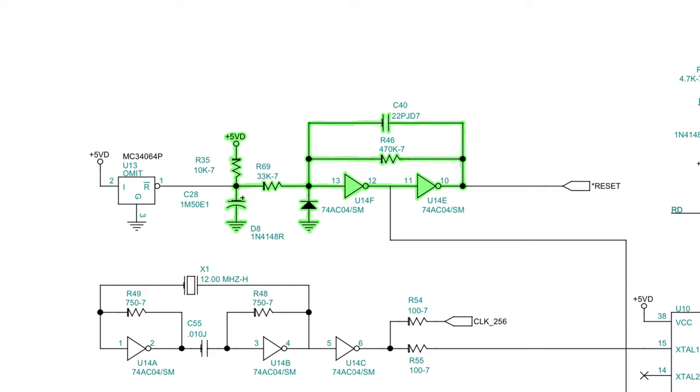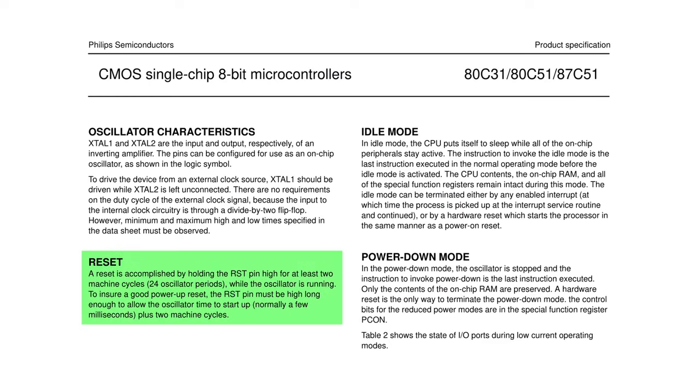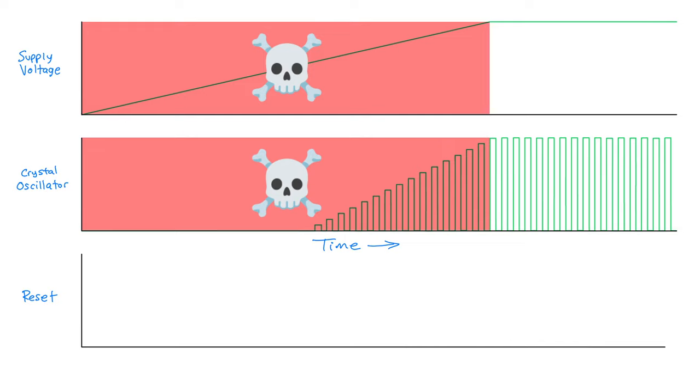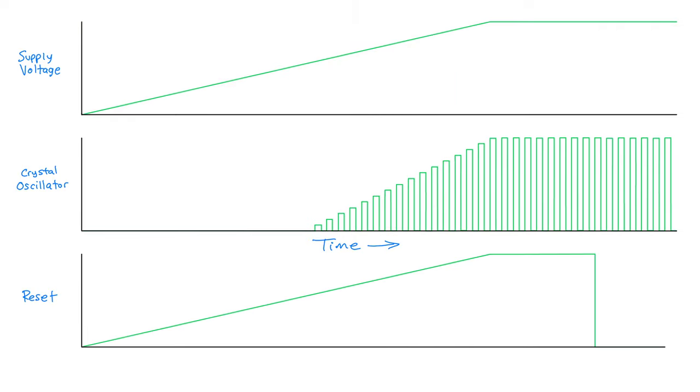But why do we need a reset circuit anyway? Many microcontrollers, especially older ones, don't wait until their supply voltage is correct before they try to run their code. And they don't wait until their clock source, the crystal oscillator, is stable at the correct frequency. If the supply voltage is too low or the clock isn't stable, the logic in the microcontroller won't operate correctly. It will do all sorts of random, peculiar, potentially undesirable things. A reset circuit is designed to hold the microcontroller in a reset state long enough for the supply voltage and clock oscillator to stabilize.